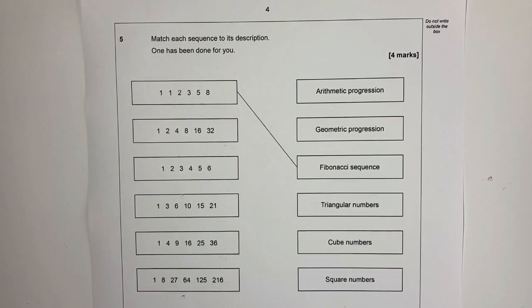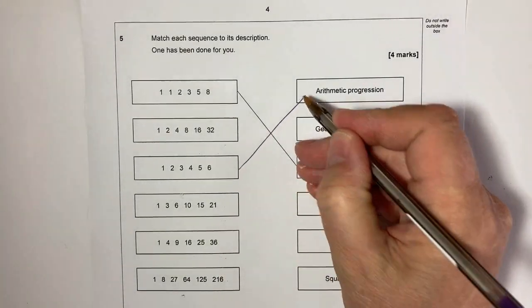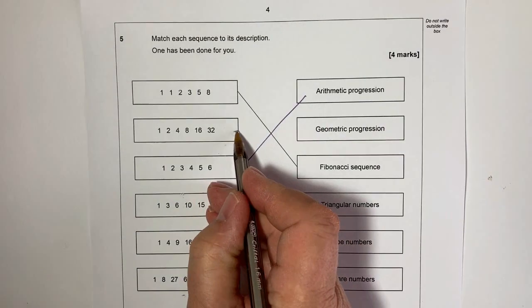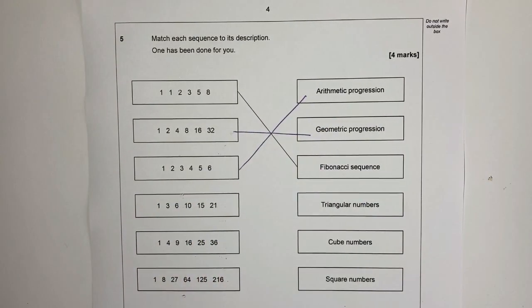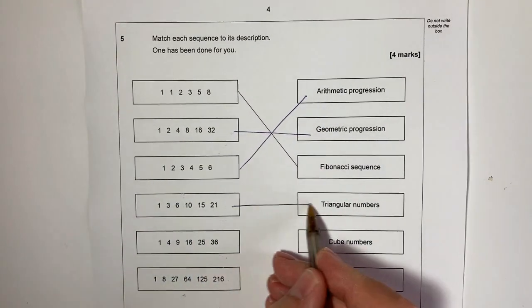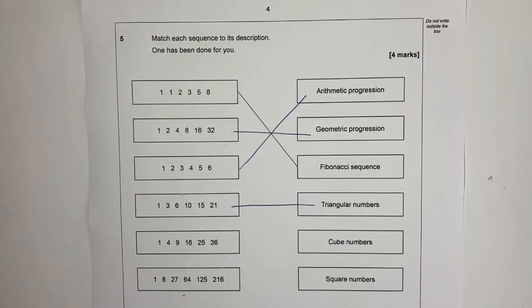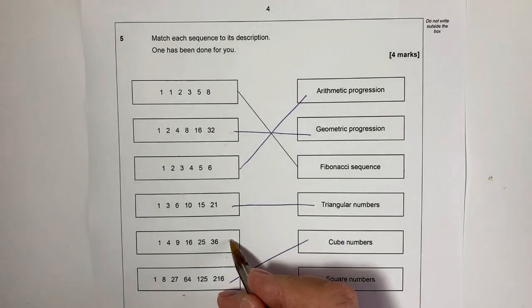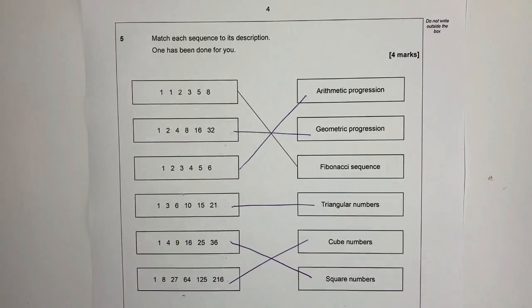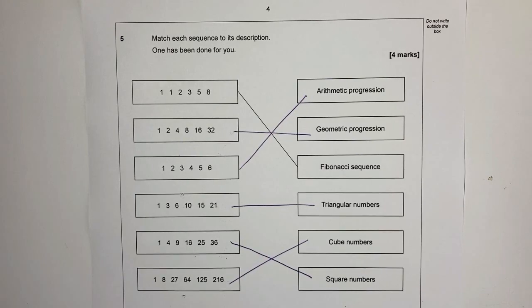These are ones that you just need to learn really. So an arithmetic progression is actually this one here, and a geometric progression is this one here. Triangular numbers are the ones in the middle. And the two at the bottom, well these are cube numbers and these are square numbers. Now for all of that you're actually going to get four marks, so it's worthwhile spending a bit of time just checking through your working on that.